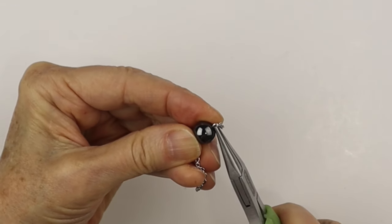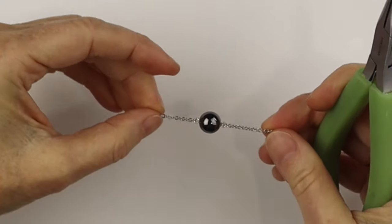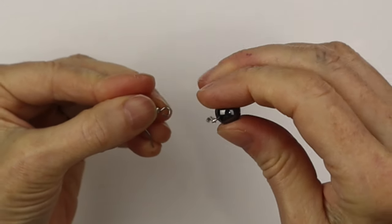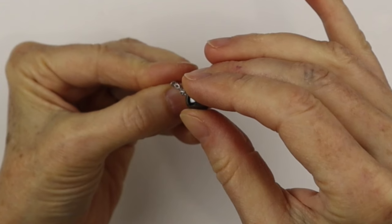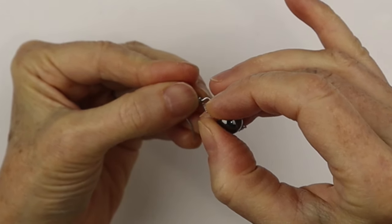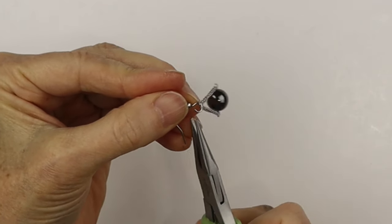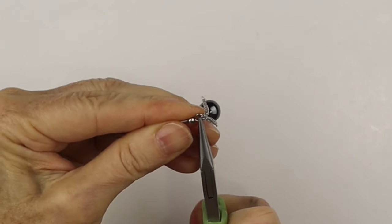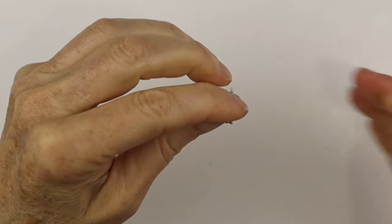So now once we have the chain on there, we'll need the hook. So I'm just using these pre-made surgical steel hooks. I'll link them up in the description below. And we're going to just slide on the chain, both of the ends, and close up the loop so it won't come off.